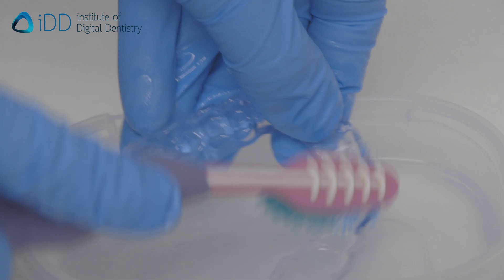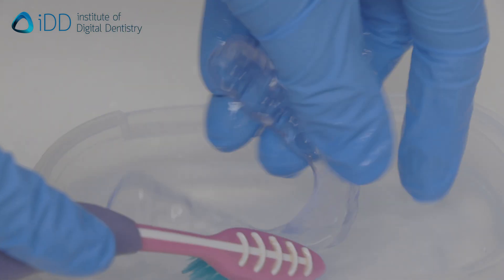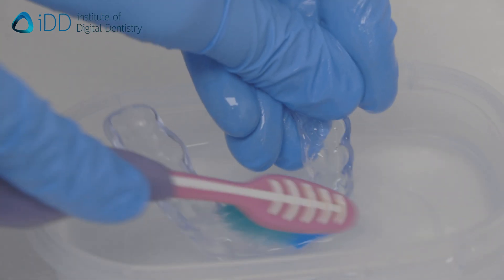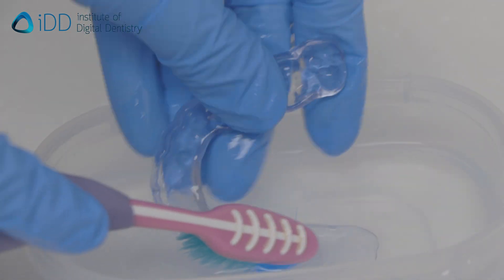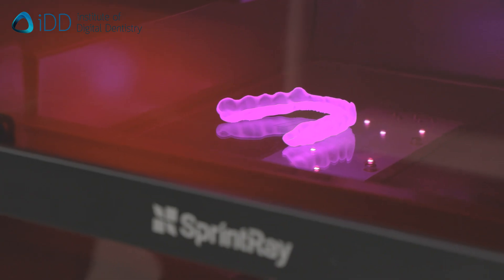Place the splint into a clean isopropyl alcohol solution and wash off the excess resin. We then proceed with a second IPA wash. Air dry the splint and carry out a final cure.